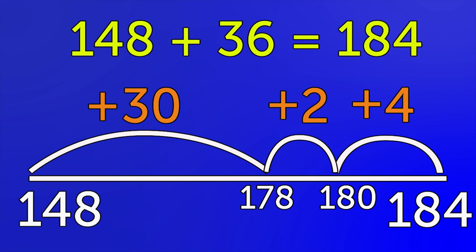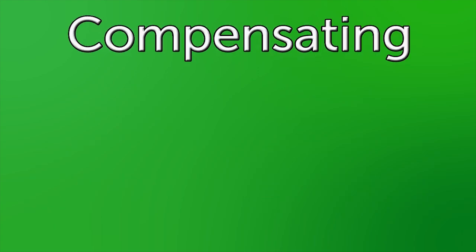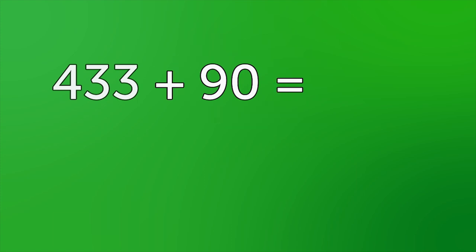Compensating: four hundred and thirty-three add ninety. In this method, you add on too much and then take a bit off. Four hundred and thirty-three plus ninety looks quite tricky, but ninety is almost a hundred, which is an easier number to add.